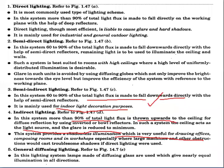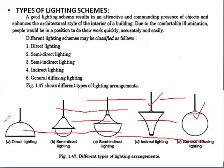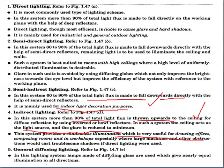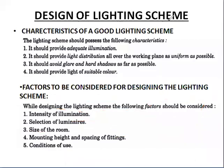In direct lighting there are two main disadvantages: glare and hard shadows. But in indirect lighting, an inverted bowl or diffuser eliminates the effects of hard shadows and glaring. In general diffusing lighting, lamps made of diffusing glass give nearly equal illumination in all directions.